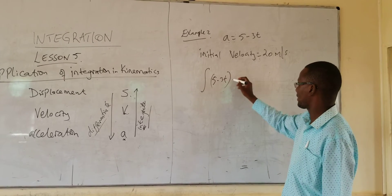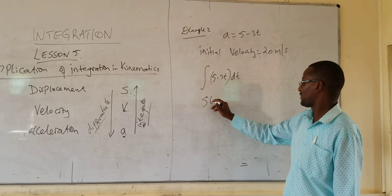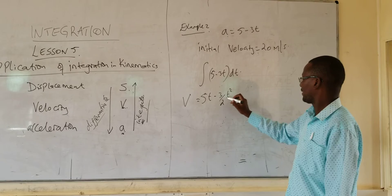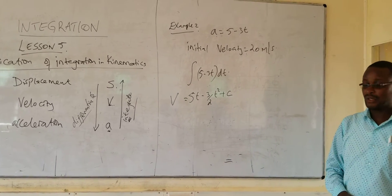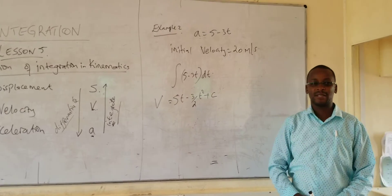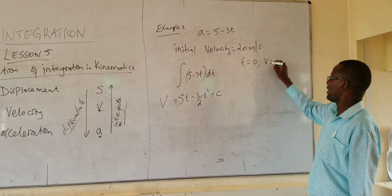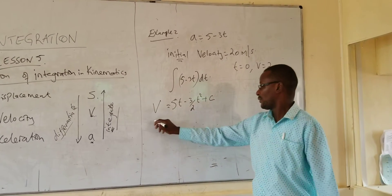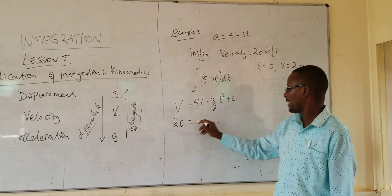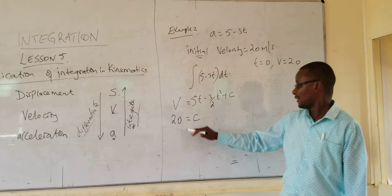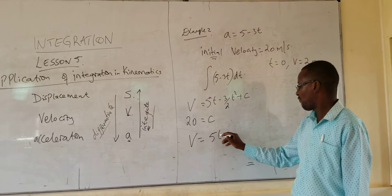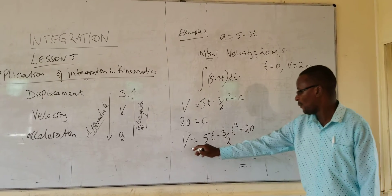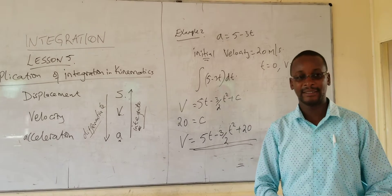Integrating gives 5t minus 3 over 2 t-squared, which equals V, plus a constant C. We are told the initial velocity is 20 meters per second, so when t equals 0, V equals 20. The word 'initial' implies t equals 0. Substituting gives C equals 20, so the expression for velocity is V equals 5t minus 3 over 2 t-squared plus 20.